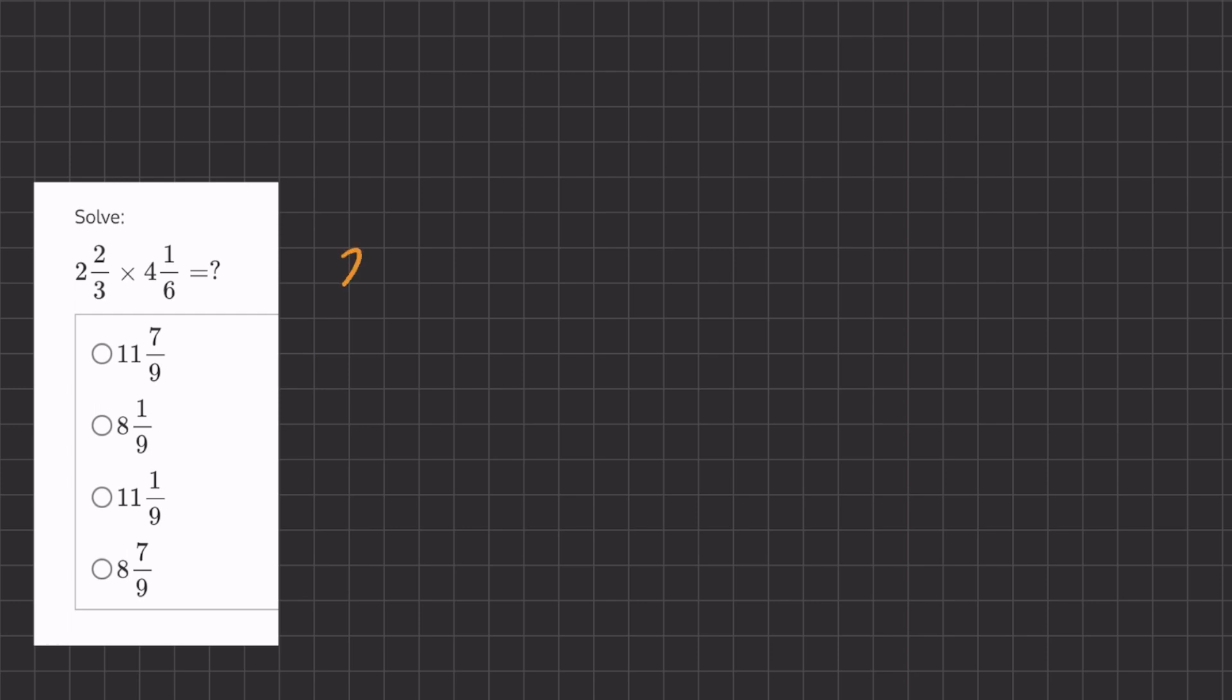We'll take our first fraction, 2 and 2/3, and turn it into an improper fraction by multiplying the denominator by the whole number and then adding that product to the numerator. So it's going to look like this: we're going to have 3 times 2 plus 2, all over our original denominator of 3. That's going to give us 3 times 2 is 6, plus 2, that's 8 over 3.